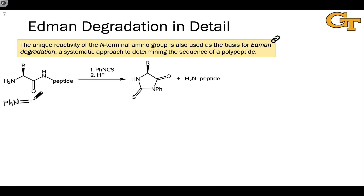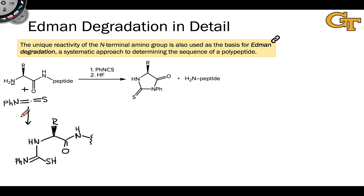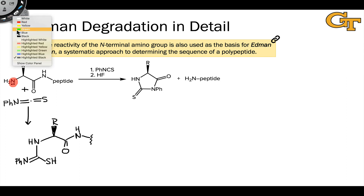Phenylisothiocyanate is electrophilic at its central carbon atom flanked by nitrogen and sulfur atoms. The key first step in the mechanism of formation of this heterocycle is nucleophilic addition of the amino nitrogen to this carbon in PIC. Through something like acid- or base-catalyzed nucleophilic addition to a polarized pi bond, the nucleophilic terminal amino nitrogen adds to the electrophilic carbon in PIC.